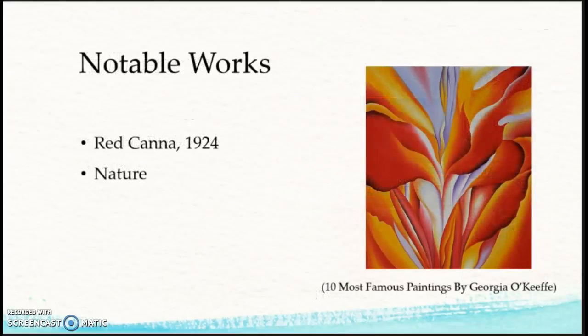Georgia O'Keeffe completed an abundance of paintings. Most of them fall into three categories. The first category is abstract paintings of flowers. She was drawn to nature and wanted to show it to others the way she saw it. She typically portrayed a portion or perspective of a plant that took closer inspection to realize, as in this work, Red Canna, which is a depiction of the plant if you looked at the flower very close up. This is a very famous portrait that she completed, and it also helped contribute to American modernism and is still relevant today.